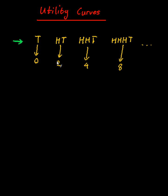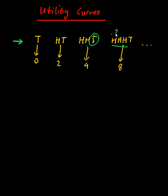But depending on the number of heads, you win an amount of money. For example, if I get tails the first time, I get zero dollars. If I get a head and then a tails, I get two dollars. If I get two heads and then a tails, I get four dollars. If I get three heads in a row, I get eight, and so on. Basically, it's the number of heads and two to the power of the number of heads — that's your prize money.